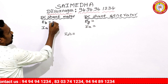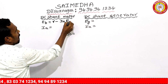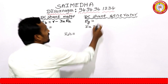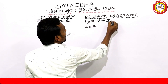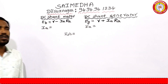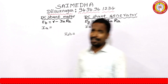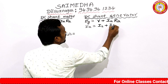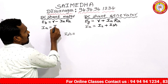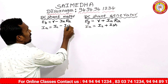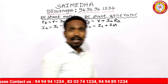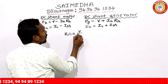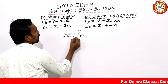For a DC shunt motor, back EMF (Eb) is equal to V minus IA·RA. For a generator, the generated EMF (EG) is equal to V plus IA·RA. In a generator, armature current IA equals line current (IL) plus shunt field current (ISH), but in a motor, IA equals IL minus ISH. The shunt field current ISH equals V divided by RSH.